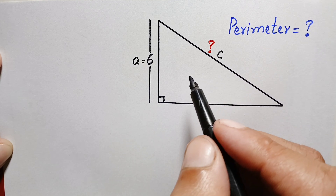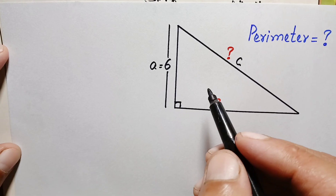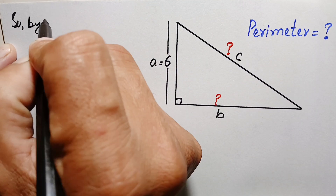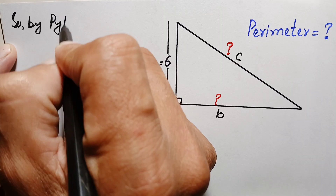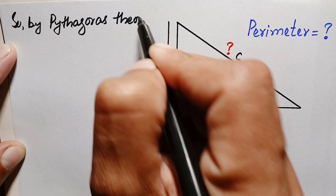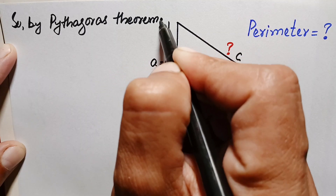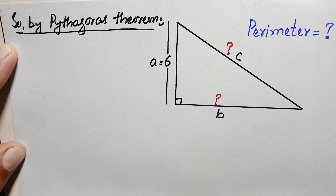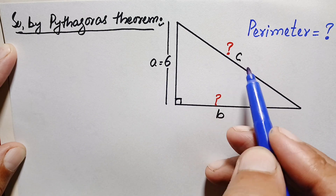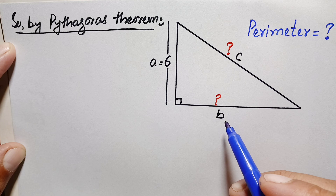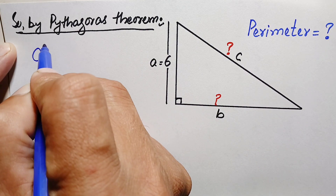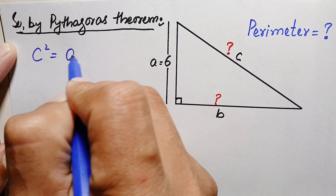Let's apply the Pythagorean theorem. The Pythagorean theorem states that in any right angle triangle, the square of the hypotenuse is equal to the perpendicular squared plus the base squared. Here our hypotenuse is c, so we can write: c² = a² + b².